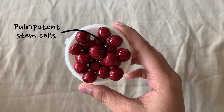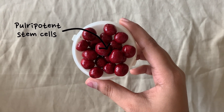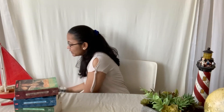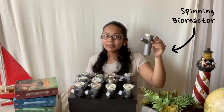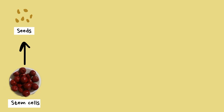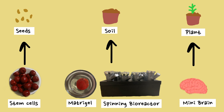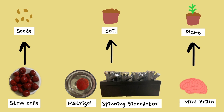It starts with human pluripotent stem cells — stem cells which can differentiate into any type of cell. These stem cells are induced into a neural ectoderm, which grows in a Matrigel droplet. Lastly, the neural ectoderm is placed in a spinning bioreactor, which is used to speed cell doubling times. Think of it like growing a plant: the stem cells are the seeds, the Matrigel droplet and spinning bioreactor are the soil, and the end result — the plant — is the mini-brain.